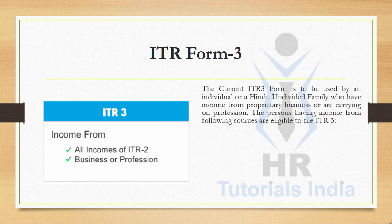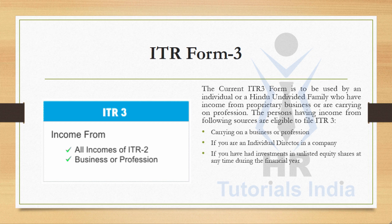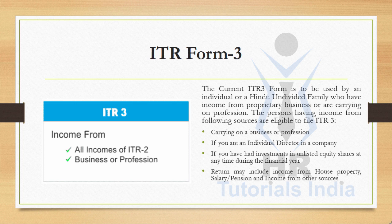ITR Form 3 is to be used by an individual or a Hindu Undivided Family who have income from proprietary business or are carrying on a profession. Persons eligible to file ITR 3 include those carrying on a business or profession, individual directors in a company, those with investments in unlisted equity shares, and those with income from house property, salary, pension, other sources, or as a partner in a firm.